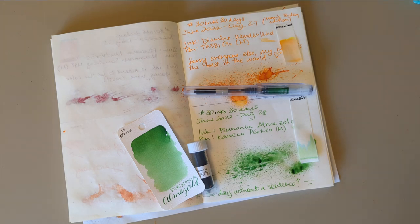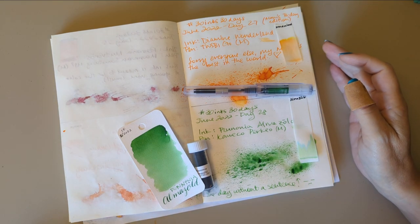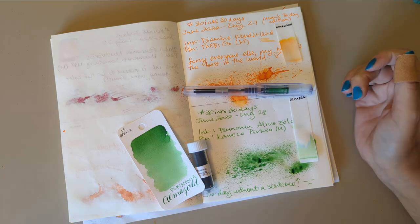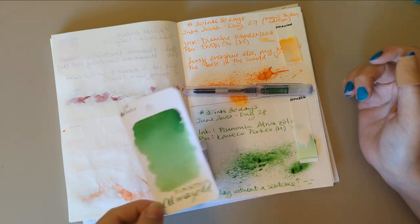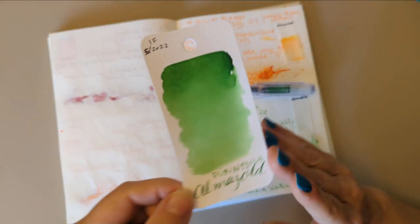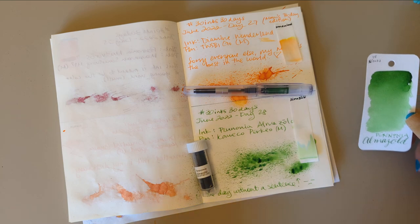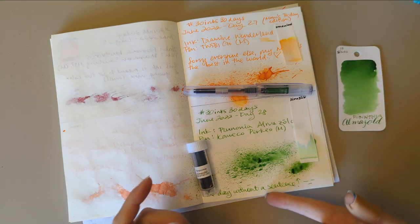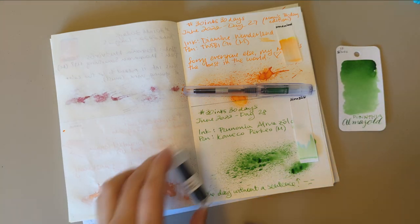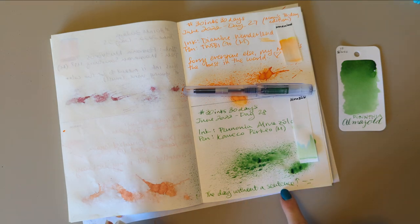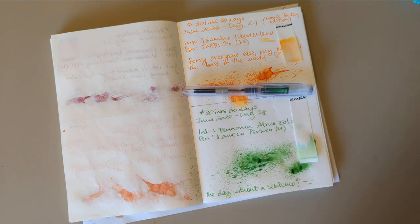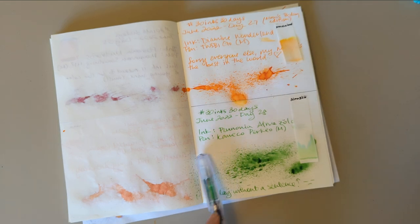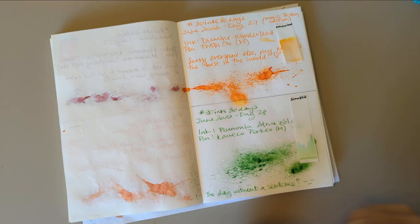Hi friends, welcome to 30 Inks 30 Days, day 29. We start off looking at yesterday's ink, which was Almost Old by Pannonia. I didn't write a sentence, so that's a thing. I've had that in my Kaweco Perkaio and I really liked the shading on this ink. It's a nice cheerful color.